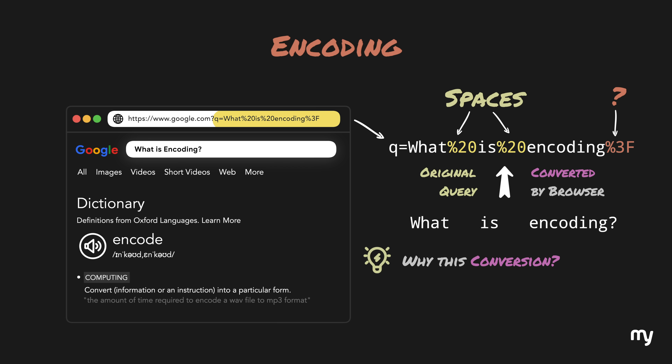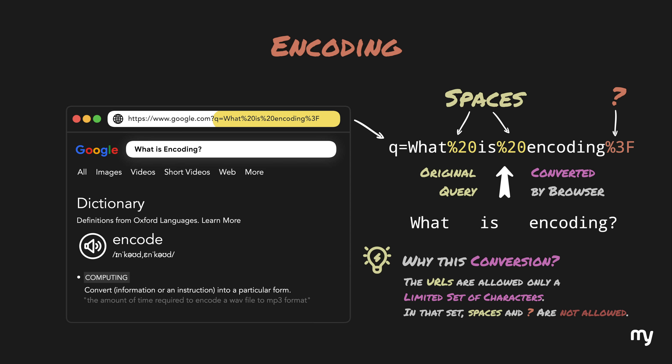Why? Because URLs are allowed to have only a limited number of characters. And in that character set, characters like space are not valid, but it still needs to be sent. Therefore, it is converted into something that belongs to the allowed character set. This type of transformation of data from one form to another, for the purpose of storage or transmission, is called encoding.